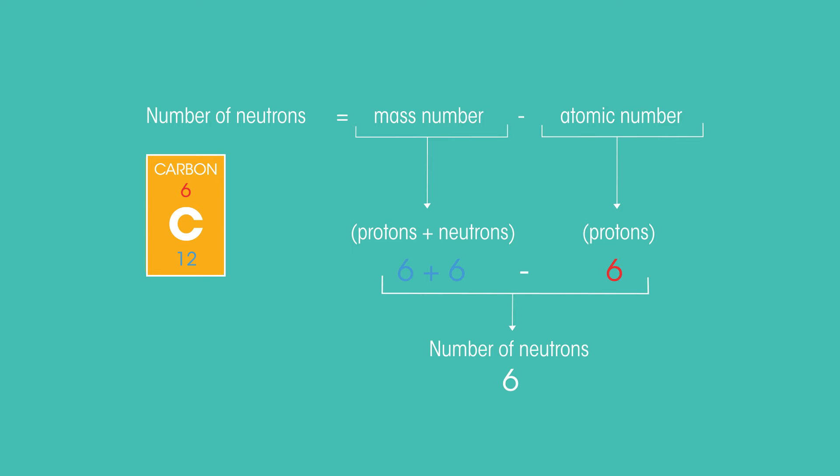This is all very handy, because by using the atomic number and mass number, you can calculate the number of neutrons in an atom. You can simply subtract the atomic number from the mass number. All you are doing is subtracting the number of protons from the total number of protons and neutrons, so that what you are left with is the number of neutrons.